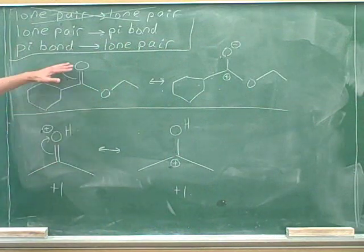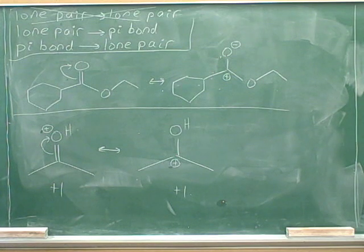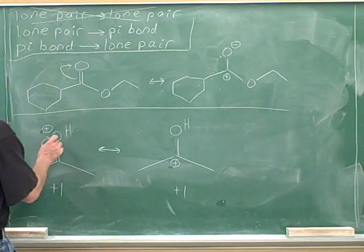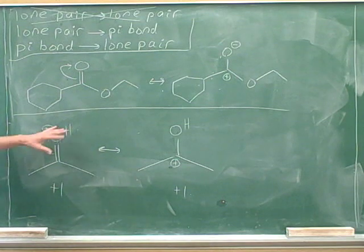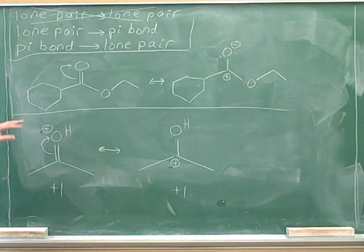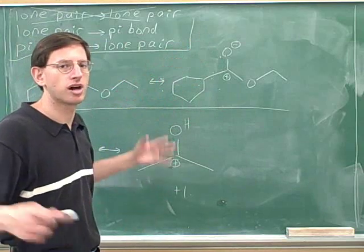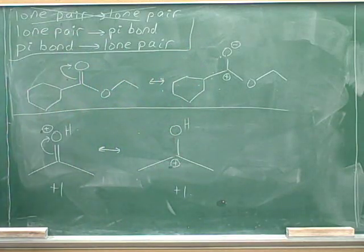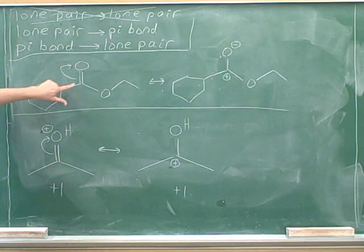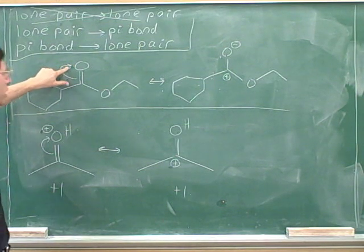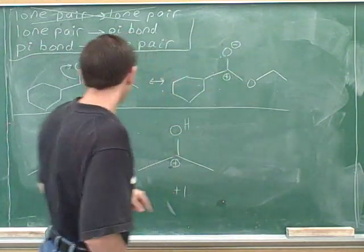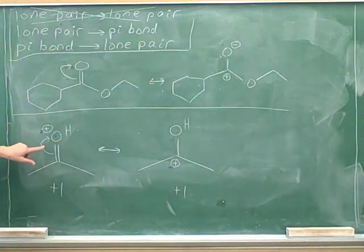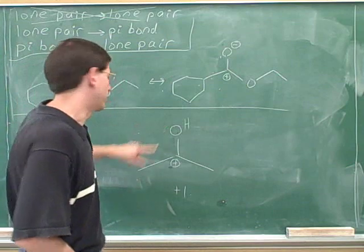Let's compare this example with the example we did previously. They're very similar but there is one difference. In both cases the head of the arrow is on the oxygen, so in both cases the oxygen is gaining a lone pair, and in both cases we didn't actually draw the lone pair. In this case the oxygen started off with a zero formal charge, so when it gains electrons it gets a negative formal charge. But in this case the oxygen started with a positive formal charge, so when it gained electrons it just got up to a zero formal charge.